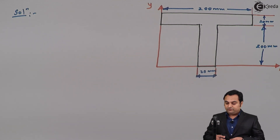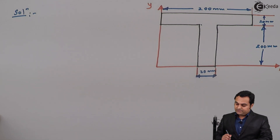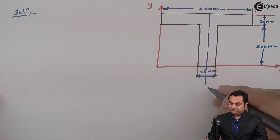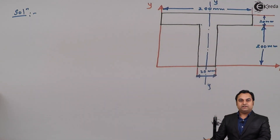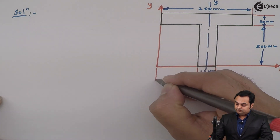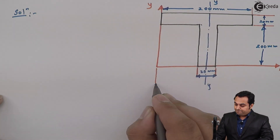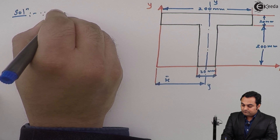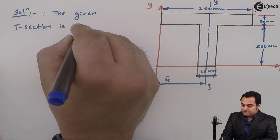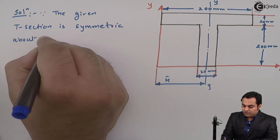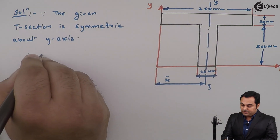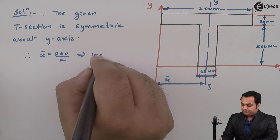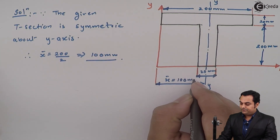We need to find the centroid of the T-section to calculate the moment of inertia about the x-axis and y-axis. Since the T-section is symmetric about the vertical y-axis, x-bar is exactly half of the total width of 200 mm, giving x-bar = 100 mm.